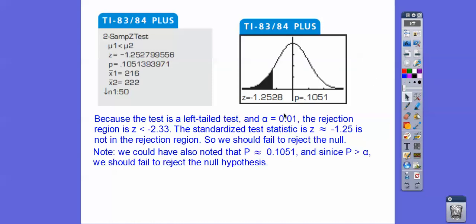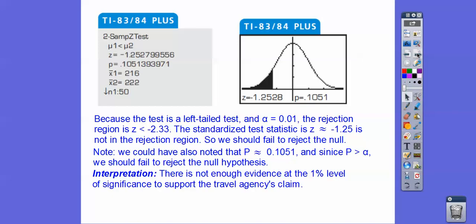We can also note that here's the probability. The probability is over 10%, and since that's greater than 1%, we can still fail to reject the null.